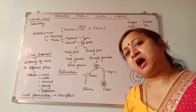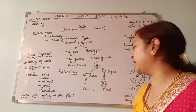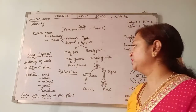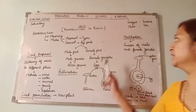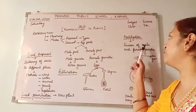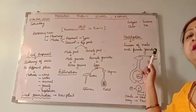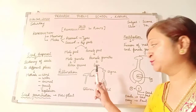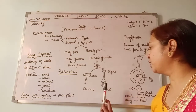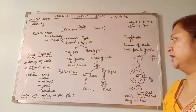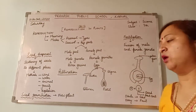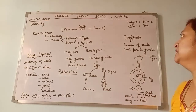So pollen grains land on the stigma, and the female reproductive part contains the eggs. Now, what process comes after this? The process that comes after this is fertilization. Fertilization is the fusion of male and female gametes. This male gamete - the pollen grain - came to the stigma, and from there it will go in and fuse with the egg.